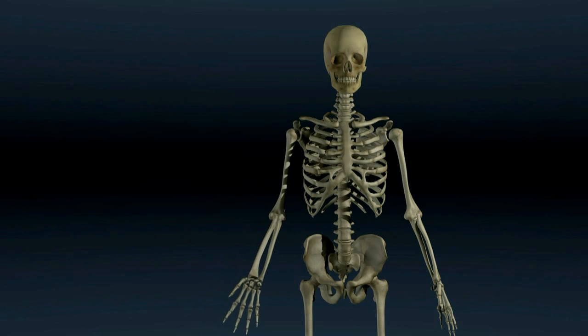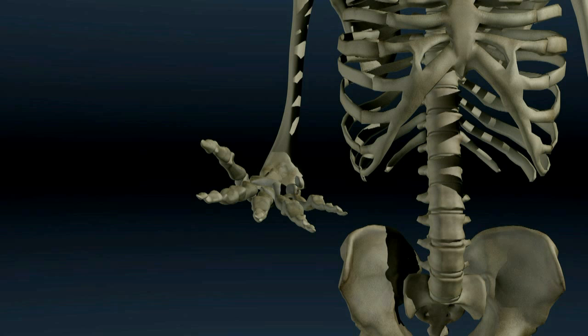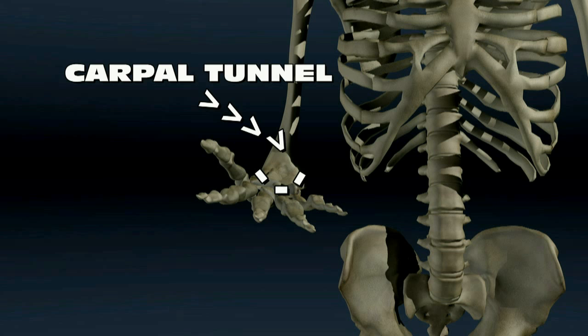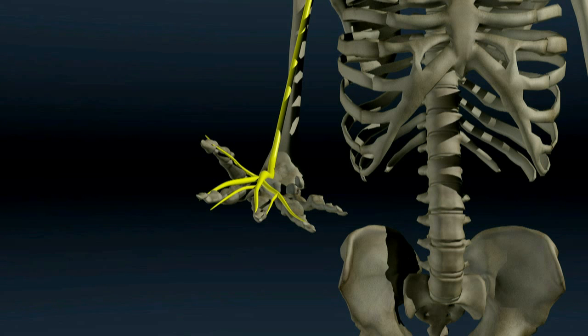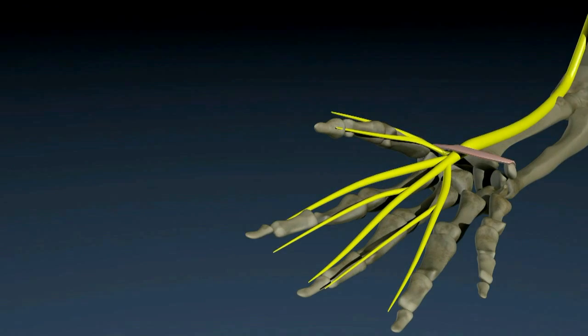The carpals are small bones in the wrist. They form a tunnel. A nerve known as the median nerve travels through this carpal tunnel on its way to the hand. The tunnel is covered by a structure known as the transverse carpal ligament.